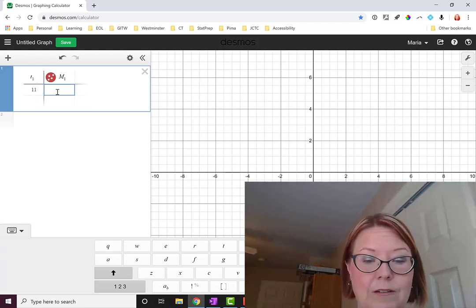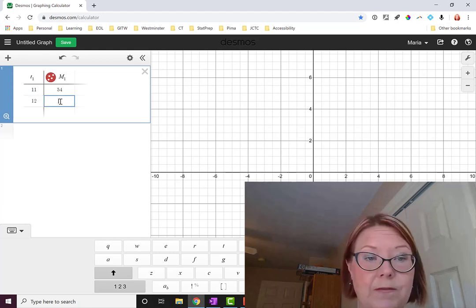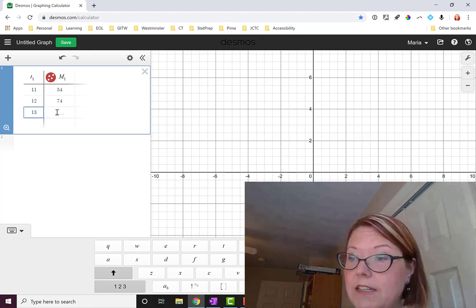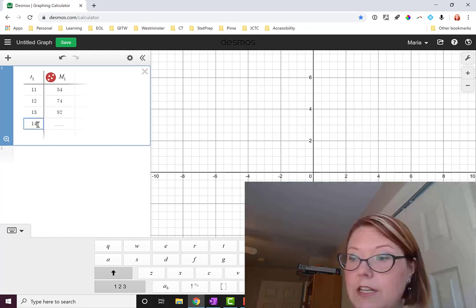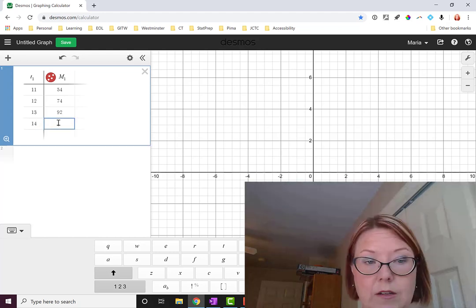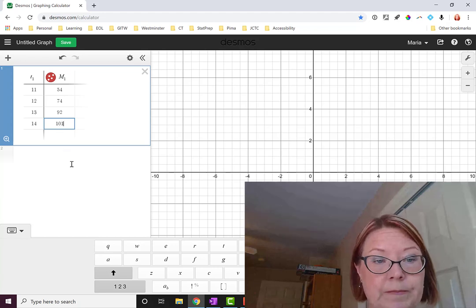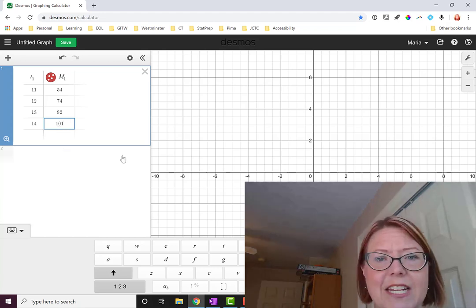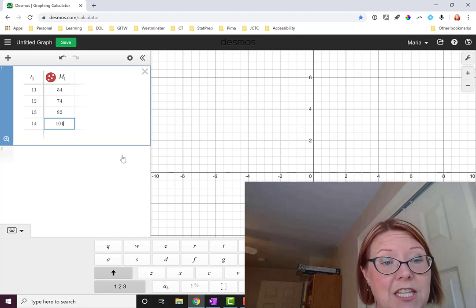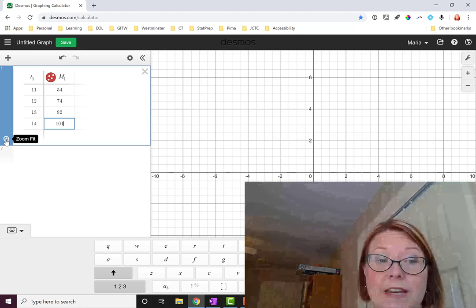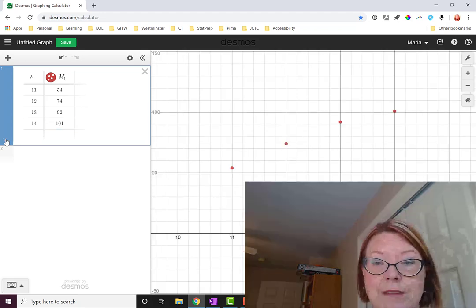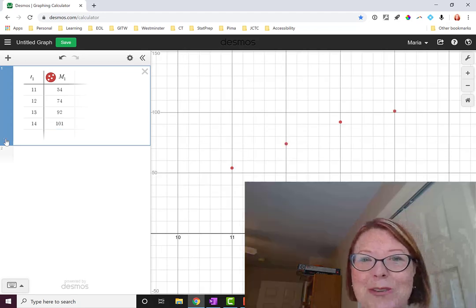Now I'll put in my data. 11, 54, 12, 74, 13, 92, and 14, 101. Now I'm not seeing this data on the graph, and there is a little icon to the left side of the table that says zoom fit. If you press that icon, it should jump you to a place where you see the data in the table.